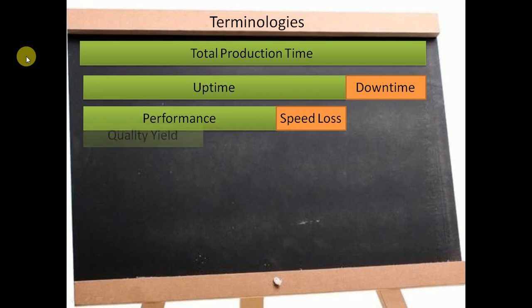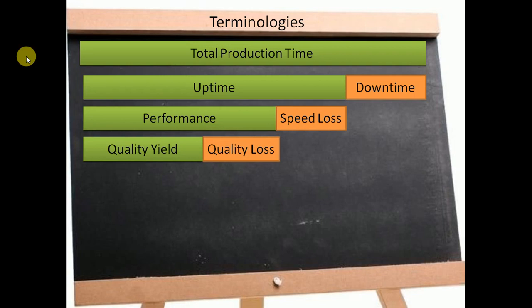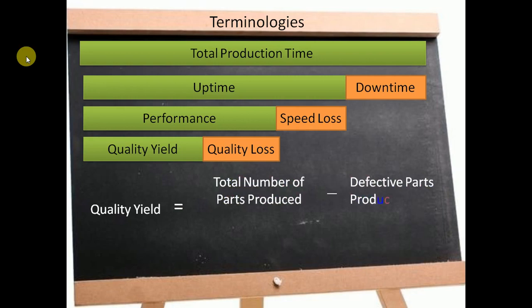The third important criteria to calculate OEE is quality yield. Quality yield is the ratio of the good parts produced to the total parts produced, also calculated as the total number of parts produced subtracted by the defective parts produced, divided by the total number of parts produced.